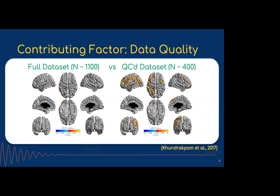Another contributing factor to reproducibility issues is data quality. This study on the ABIDE dataset tried to discriminate between healthy controls and autistic participants. One study found no differentiating factors between the two classes, but when much stricter quality control was applied — throwing out basically two-thirds of the dataset and leaving only high-quality data — they found many differences between these populations.